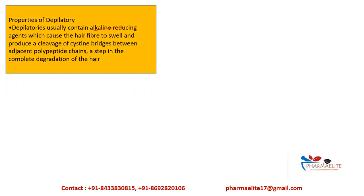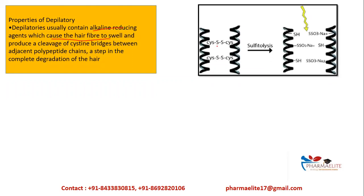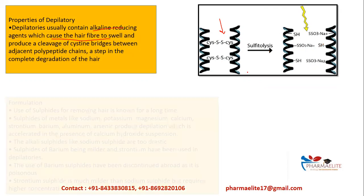Depilatories usually contain an alkaline reducing agent which causes the hair fiber to swell and produces cleavage of the cystine bridge between adjacent polypeptide chains, causing degradation of hair. The cystine bridge between the two adjacent chains is cleaved — this bridge breaks down, producing two separate strands — which causes the hair fiber to swell out and degrade. The hair gets loosened by swelling and can then be washed or wiped away.